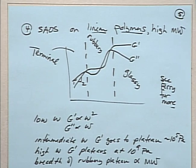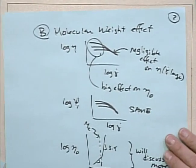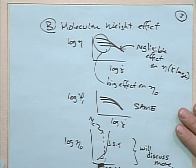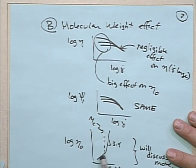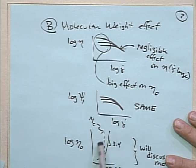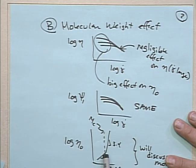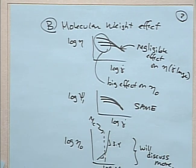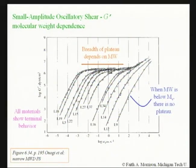There is a critical molecular weight Mc in small amplitude oscillatory shear, analogous to the critical molecular weight in steady shear viscosity. Below Mc you don't see the rubbery plateau. Starting with the sample labeled L34 you start to see the plateau - those are above the critical molecular weight for entanglement.